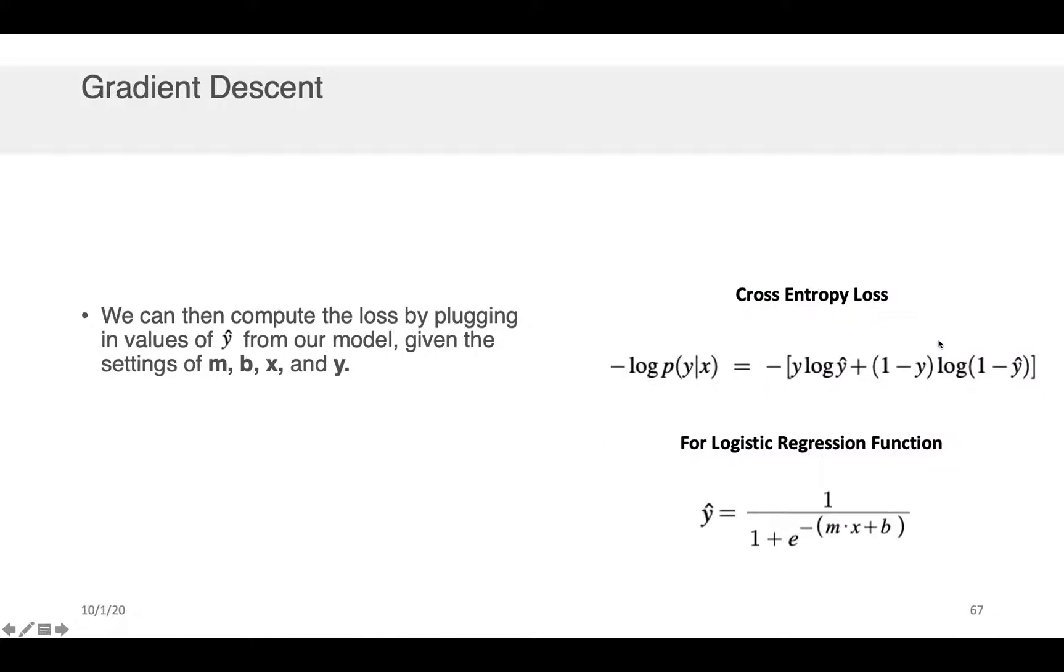Now, you may also recall from the lecture that when we want to optimize for the values of m and b, what we do is we basically take a bunch of data points x and y and we plug them into this equation first. So we take all of our x's, we generate a bunch of values of y hat using the logistic regression function.